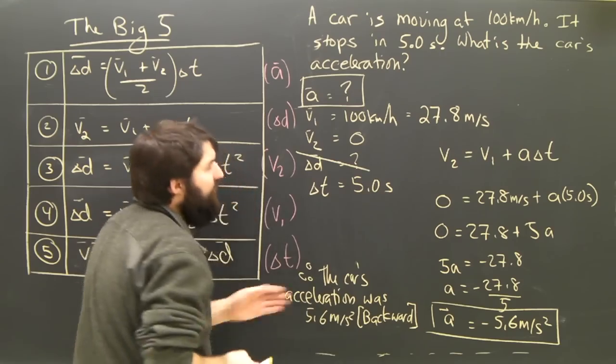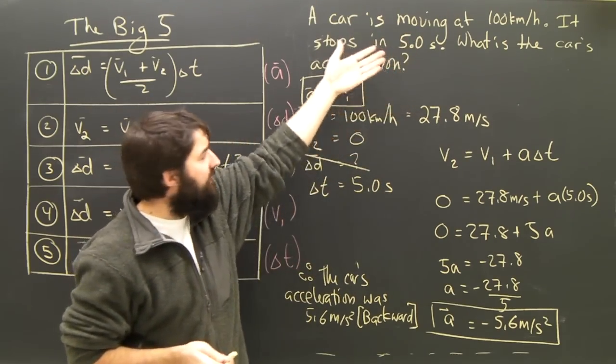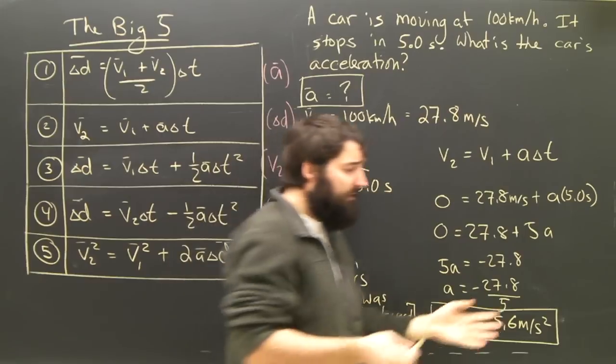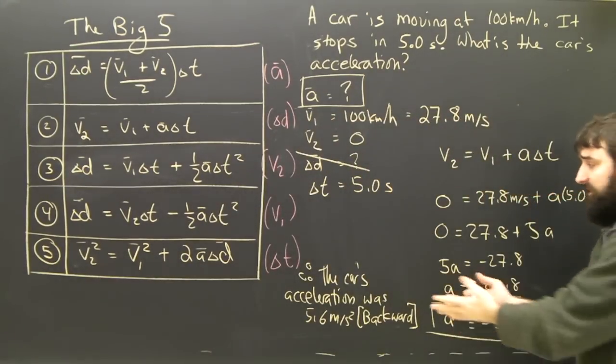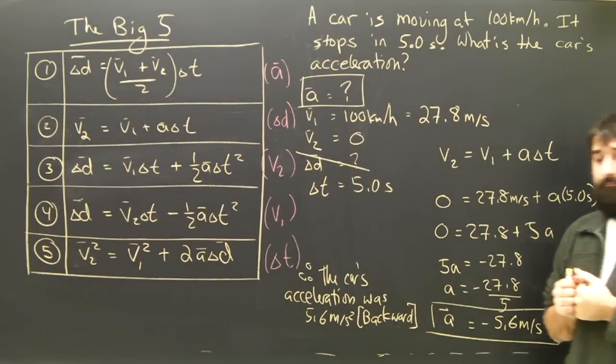If the question had told us that 100 kilometers an hour was east, then this would be west. But the question didn't say, so all I can do is say the acceleration is backward.